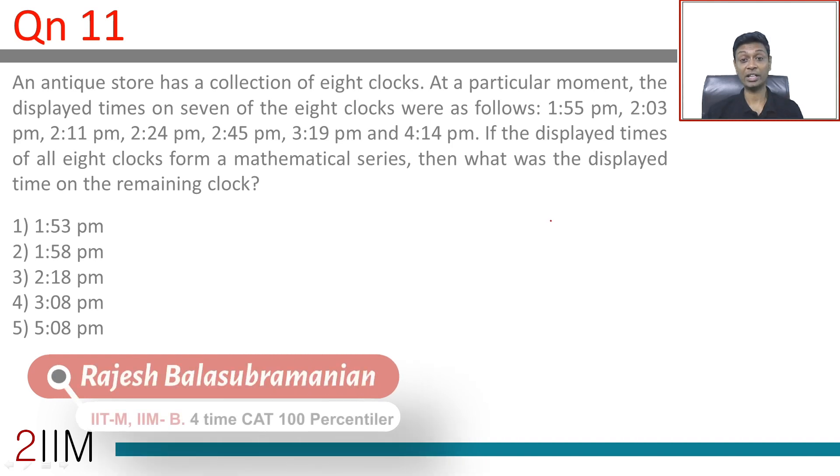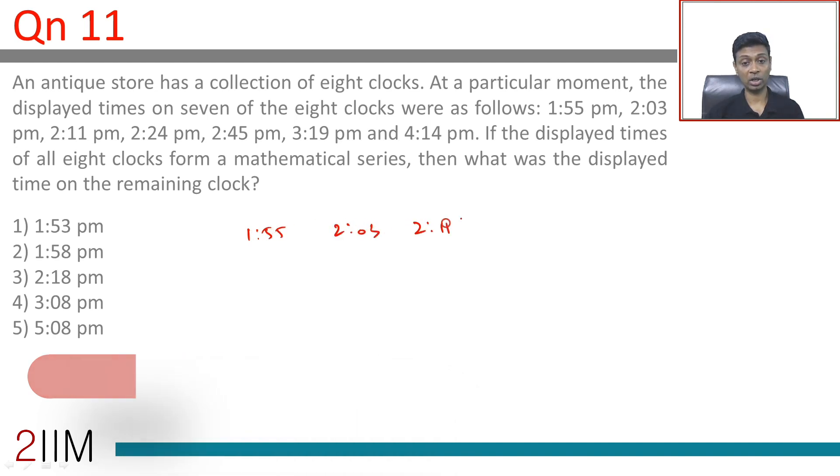An antique store has a collection of 8 clocks. At a particular moment, the displayed times of 7 of the 8 clocks are 1:55, 2:03, 2:11, 2:24, 2:45, 3:19, and 4:14.